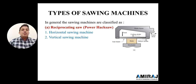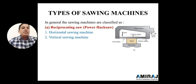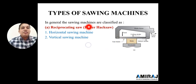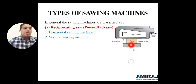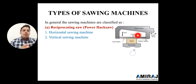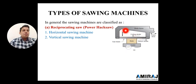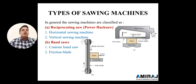First is the reciprocating type sawing machine, also known as a power hacksaw. In our workshop, it has two types of orientation: horizontal sawing machine and vertical sawing machine. Here, the work table is there, the workpiece is fixed on the work table, and the motion of the saw will be a horizontal or inclined motion.